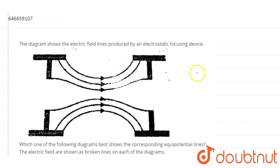So the key to this question is that equipotential lines or equipotential surfaces are perpendicular to electric field or electric field lines.